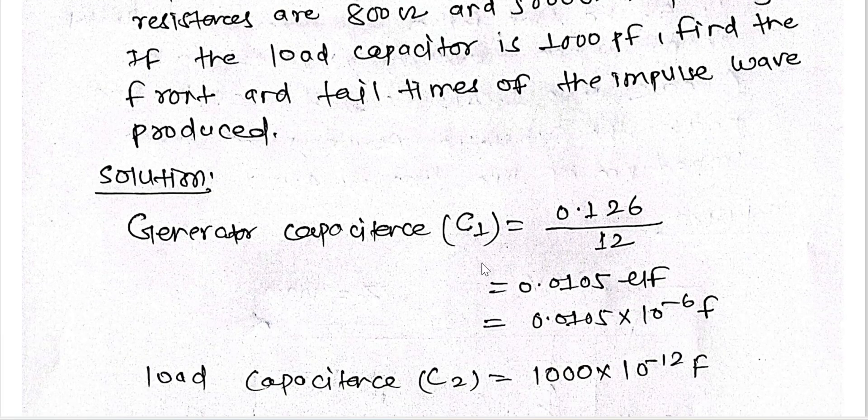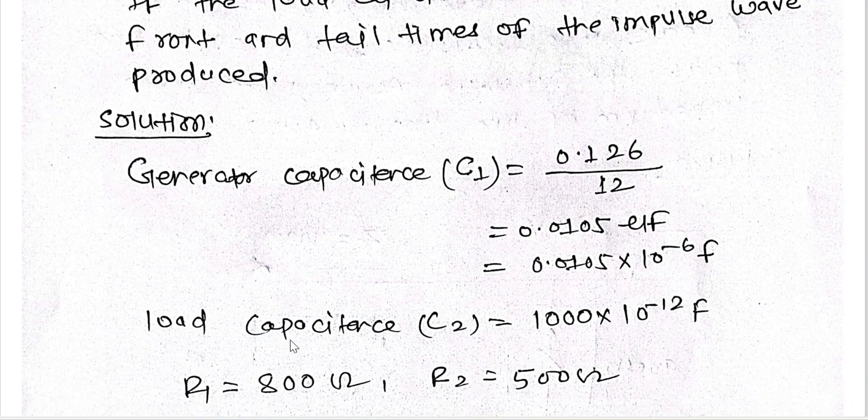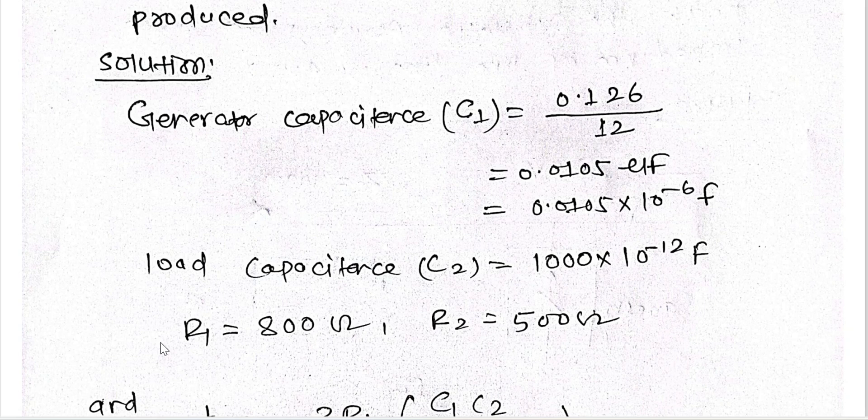Given generator capacitance, it's 0.126 divided by number of stages, which is 12, and we get the generator capacitance. Similarly, load capacitance is already given in the question as 1000 picofarad.